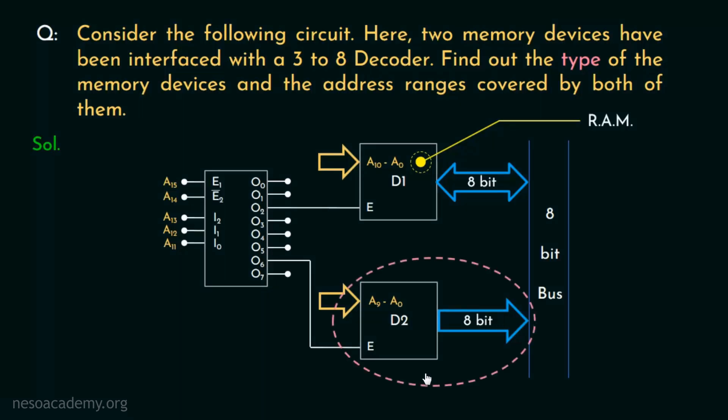Now, coming to D2, the bus connected to it is clearly a unidirectional one. That means we can only read from D2 but we cannot write on it. Therefore, undoubtedly, D2 is a read-only memory or ROM.